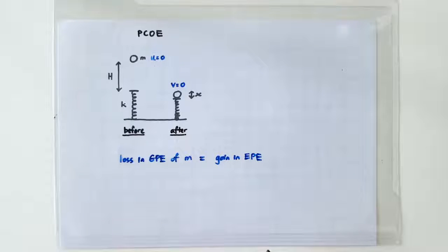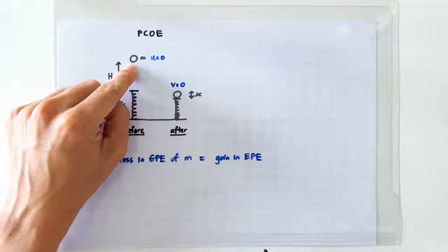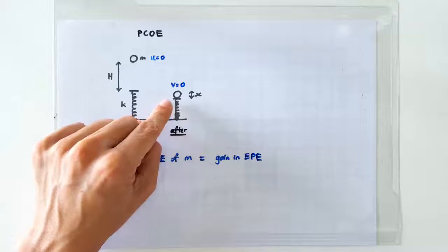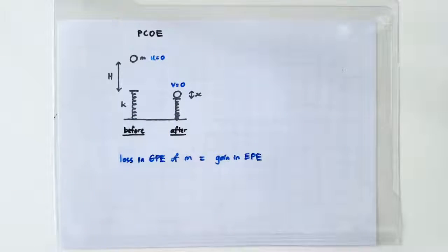Wait, what about the kinetic energy? Well, at the instant when the ball was dropped, its speed was of course zero. At the instant when the spring is most compressed, the ball is also at rest.